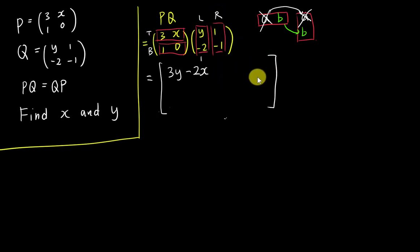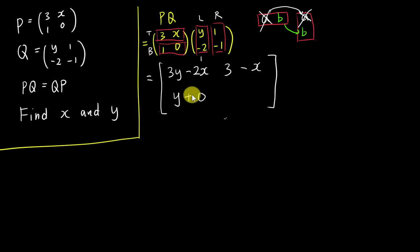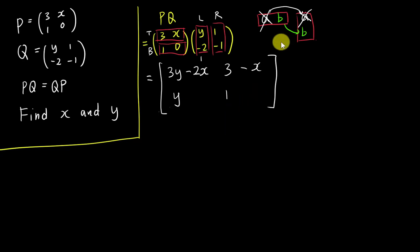For the bottom-left entry, I use the bottom row and the left column. One multiplied by Y gives Y, then zero multiplied by negative two gives zero. So the bottom-left entry is Y. For the bottom-right entry, one multiplied by one gives one, zero multiplied by negative one gives zero. So the bottom-right entry is one. I've now finished computing PQ. Next, I want to compute QP and then equate them to solve for X and Y.